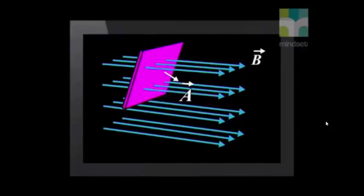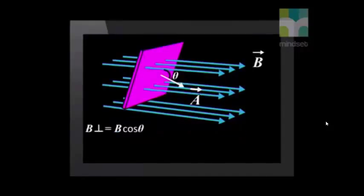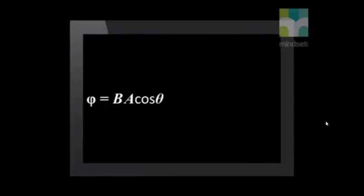If there is an angle between the magnetic field B and the normal to the area A, then we calculate the component of the magnetic field perpendicular to the area. Let theta be the angle between the magnetic field and the normal to the area. Then the component is equal to the magnetic field B multiplied by cos theta. So the formula changes to this: The magnetic flux φ is equal to the product of the magnetic field B and the area A times cos theta, where theta is the angle between B and the normal of the surface.